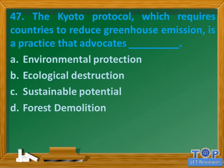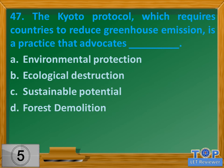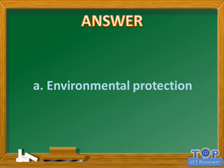Question number 47. The Kyoto Protocol, which requires countries to reduce greenhouse emissions, is a practice that advocates blank. A. Environmental protection. B. Ecological destruction. C. Sustainable potential. D. Deforestation/demolition. Answer: A. Environmental protection.